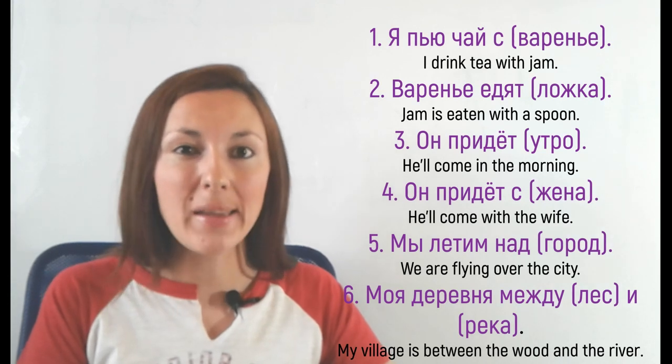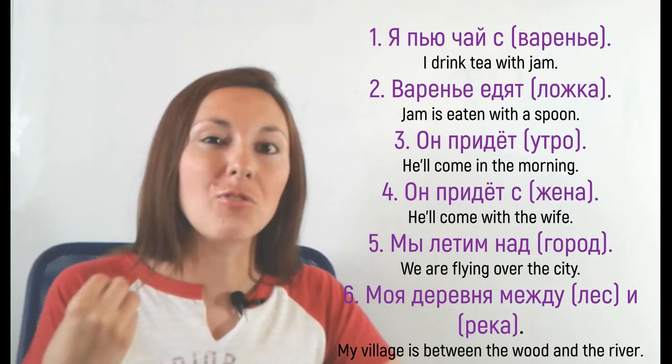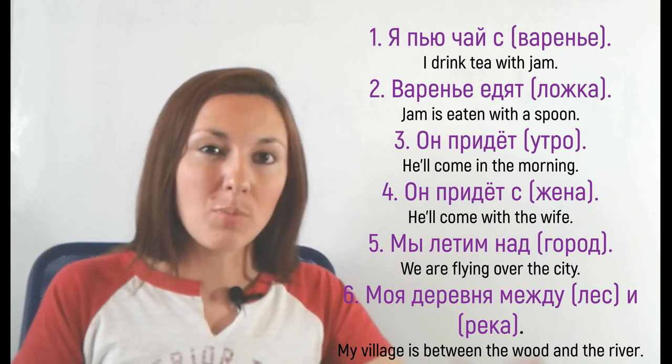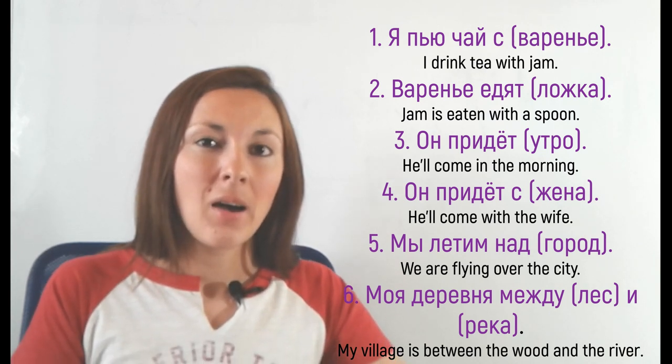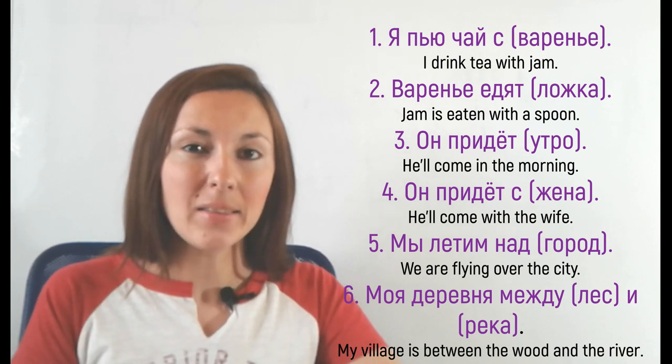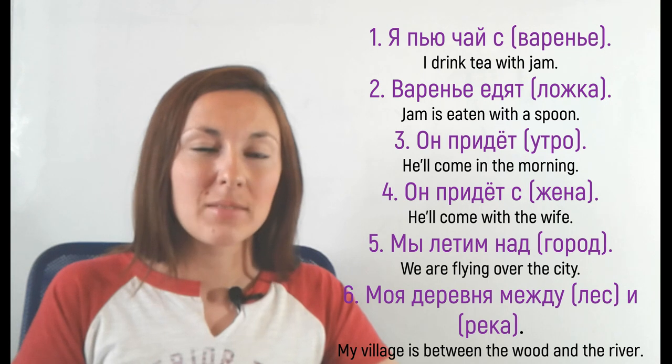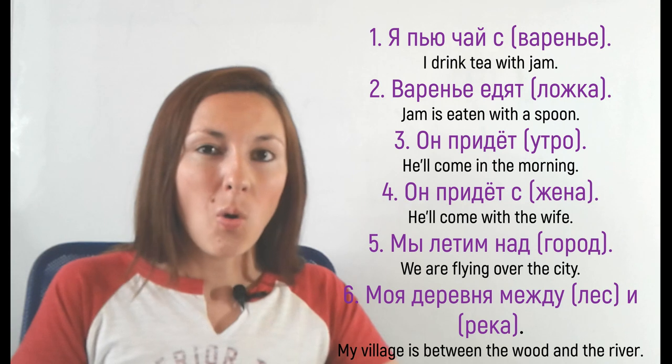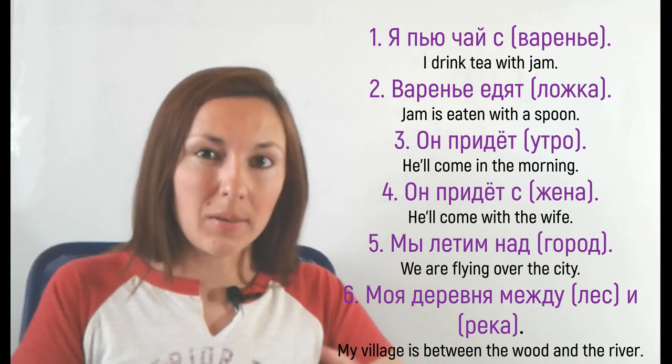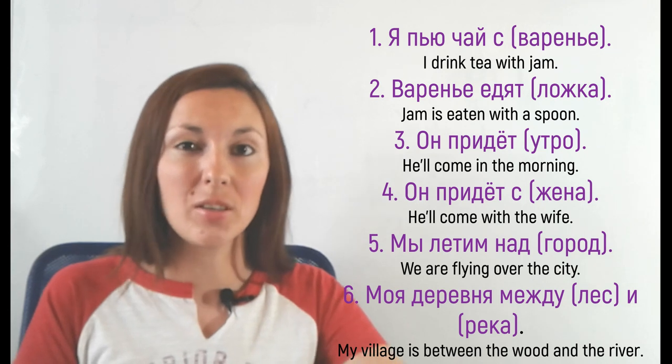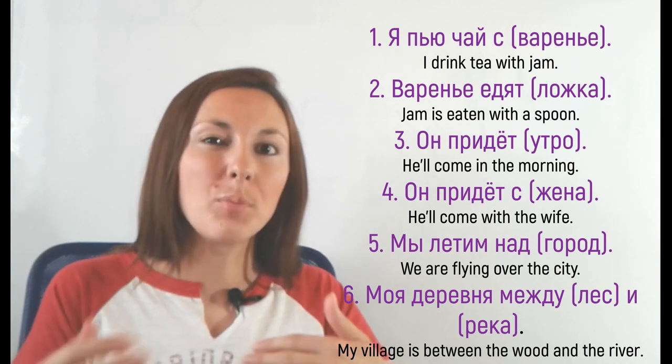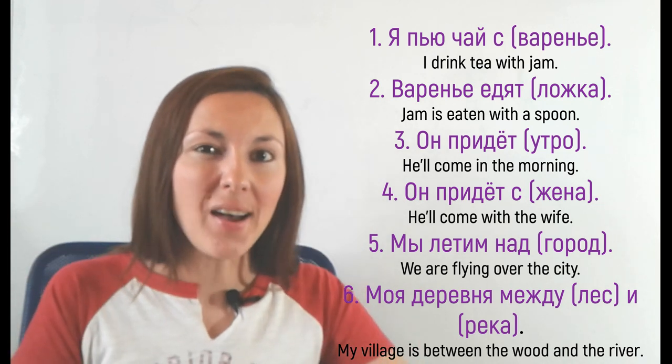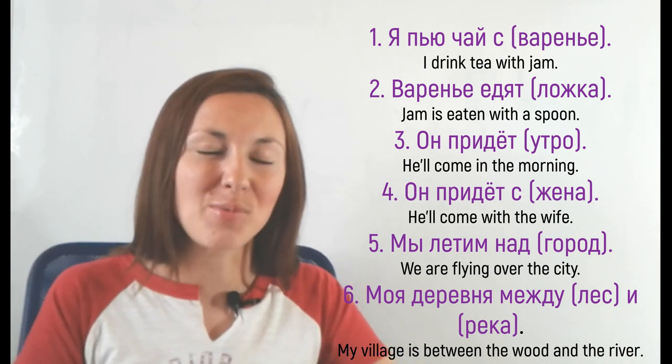For now, put nouns in the instrumental case in the following sentences. Я пью чай с ВАРЕНЬЕ, джем. ВАРЕНЬЕ should be in the instrumental case. The second: ВАРЕНЬЕ ЕДЯТ, ЛОЖКА is in the brackets. You have to put ЛОЖКА in the instrumental case. Он придет УТРО is in the brackets. You have to put УТРО in the instrumental case. Он придет С ЖЕНА is in the brackets. You have to put ЖЕНА in the instrumental case.